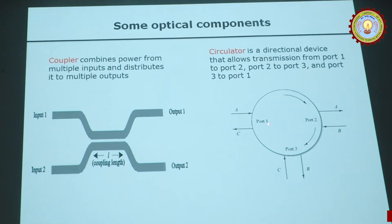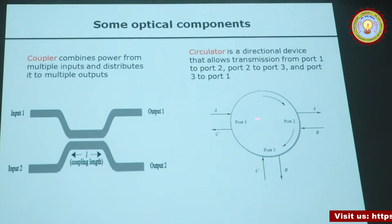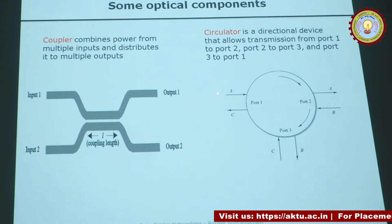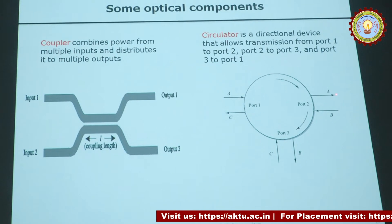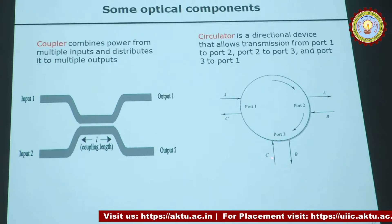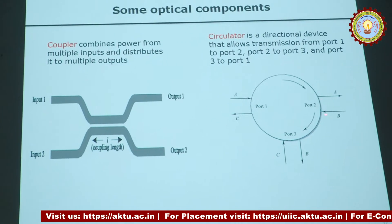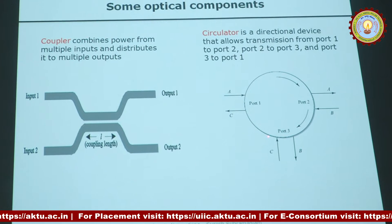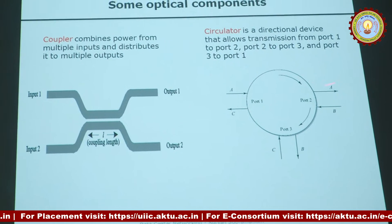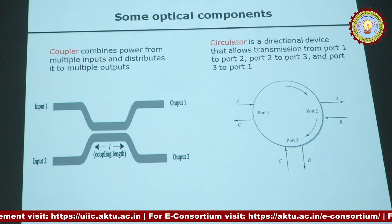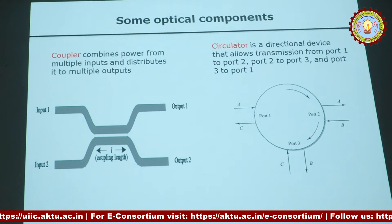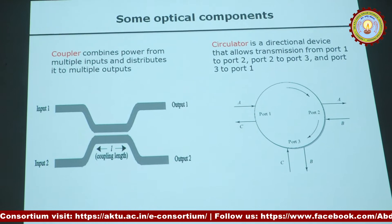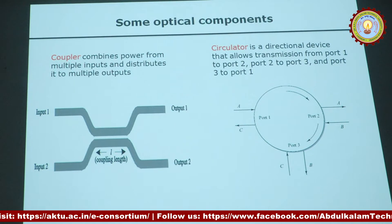A circulator is a three-port directional device. What you send into port A comes out to the next port in sequence, but not to the other port. This directional property makes it useful to implement bidirectional transmission over a single fiber.